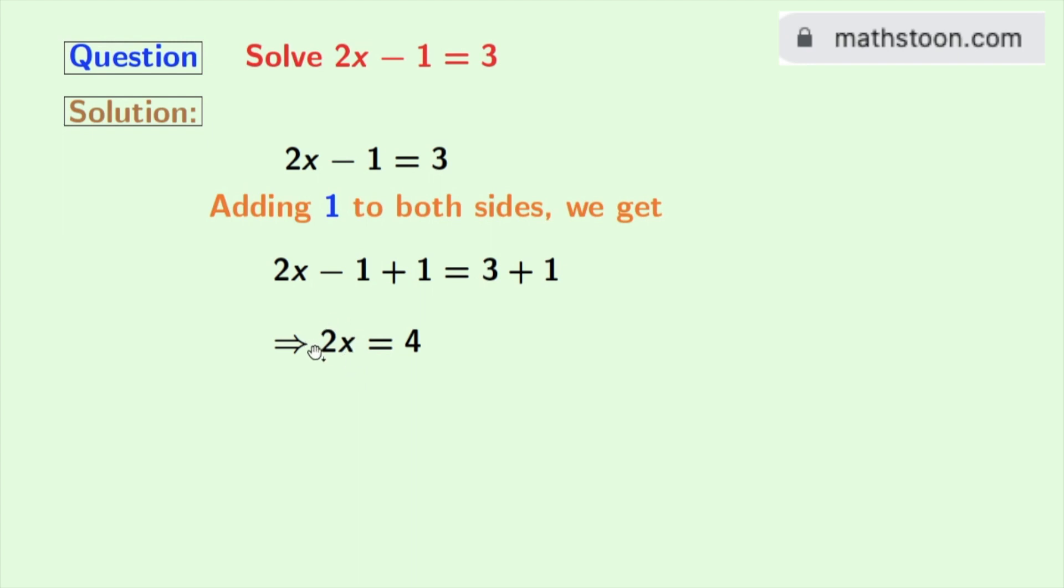As the coefficient of x is 2, so to find the value of x, we need to divide both sides by 2. So we will have 2x divided by 2 is equal to 4 divided by 2.